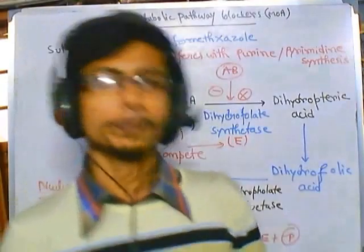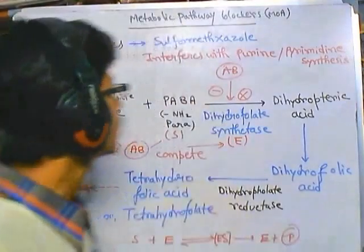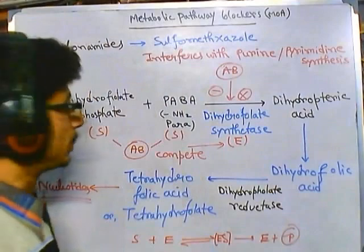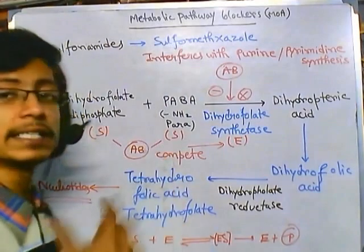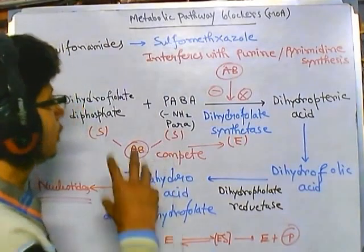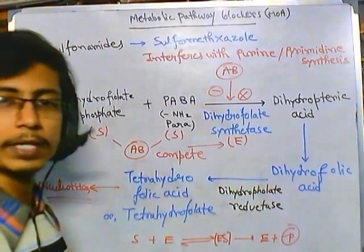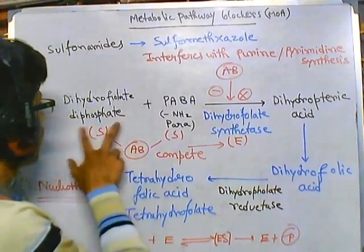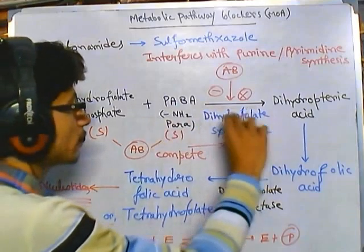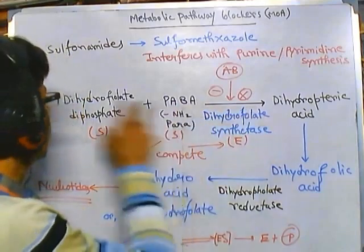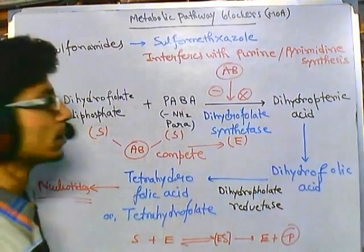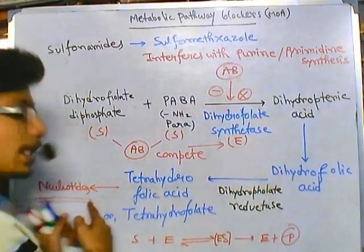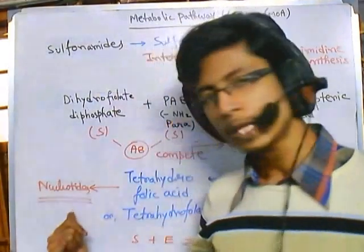Welcome again friends. In the previous video we talked about the mechanism of action of sulfonamides, which are nucleotide synthase inhibitors. Synthesis of nucleotides is a very important step inside the cell, and for this to occur we need two enzymes: dihydrofolate synthetase to join PABA and dihydrofolate diphosphate to produce dihydropteric acid, then the rest of the stages to finally get the nucleotide sequence.